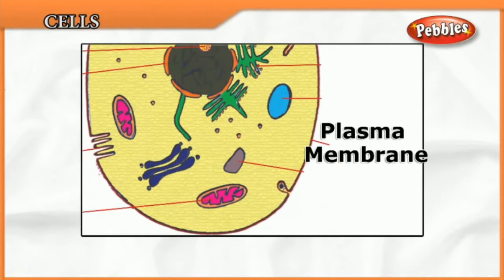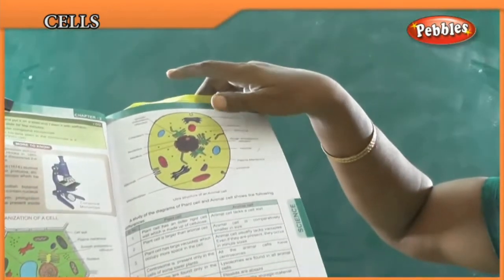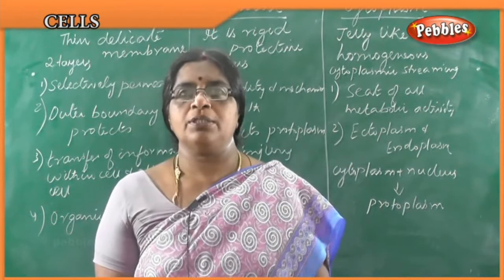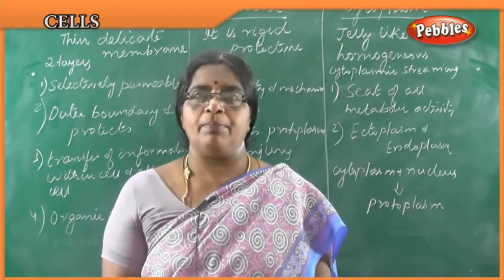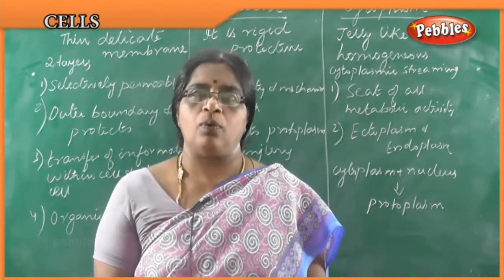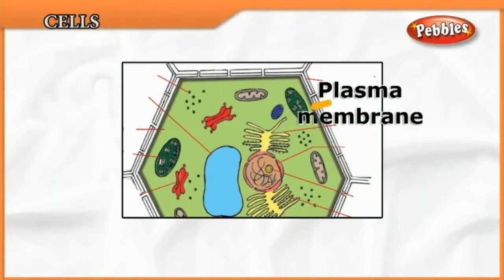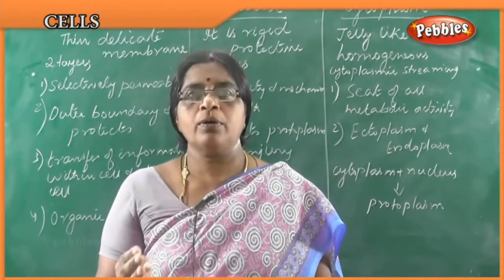The cell wall contains three layers: the middle lamella, the primary cell wall, and the secondary cell wall. The middle lamella is a thin amorphous layer. The primary cell wall is the first cell wall formed. The secondary cell wall is inner to the primary cell wall. The cell wall is rigid and thick. Its main functions are to form a protective layer, protect the cytoplasm from injury, allow transmission of energy and information, and give shape to the cell. The cell wall is present only in plant cells, not in animal cells.